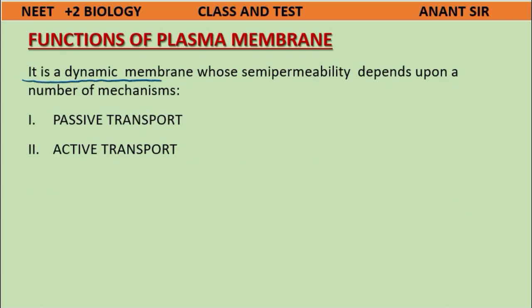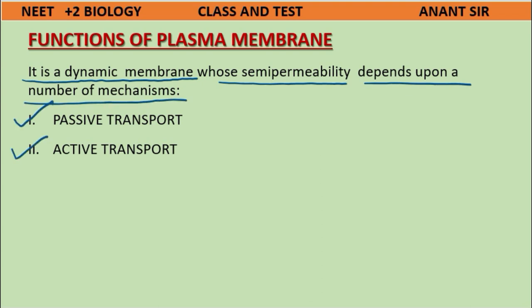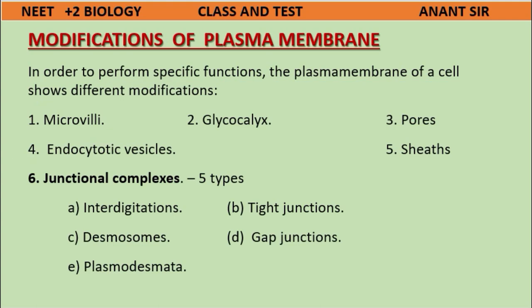The plasma membrane is a dynamic membrane whose semi-permeability depends upon a number of mechanisms: passive transport and active transport. The classification and modification of the plasma membrane — in order to perform specific functions — shows different structural modifications.